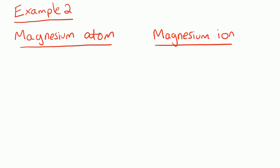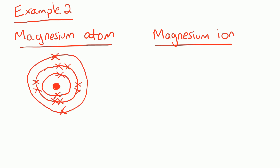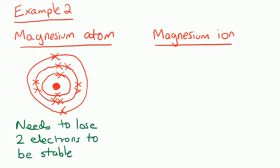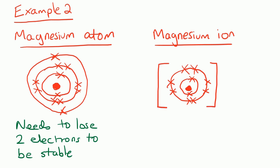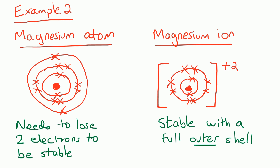Let's look at magnesium turning into a magnesium ion. Magnesium has an atomic number of 12: two electrons on the first shell, eight on the second, and two on the outer shell. Magnesium needs to lose two electrons to be stable. We draw the ion without those two electrons, leaving full shells. We draw square brackets around it, and because magnesium is in Group 2, it forms a 2+ ion — confirmed by our annotated periodic table. The magnesium ion is now stable with a full outer shell.